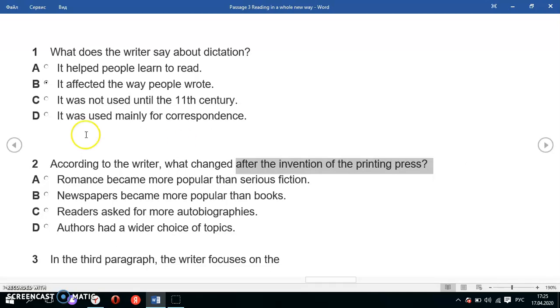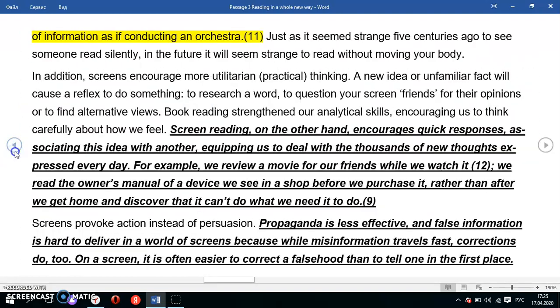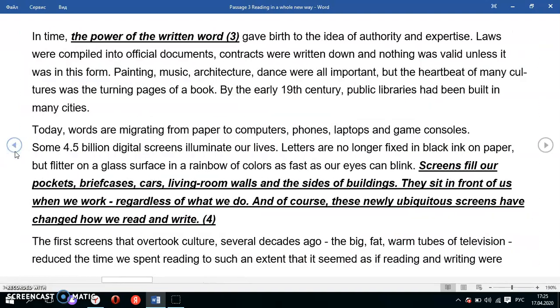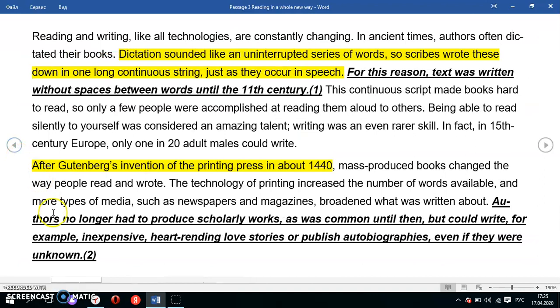Let's find it from the text. It is given in the second paragraph, already highlighted. After Gutenberg's invention of the printing press in about 1440, most produced books changed the way people read and wrote. The technology of printing increased the number of words available, and more types of media such as newspapers and magazines broadened what was written about.